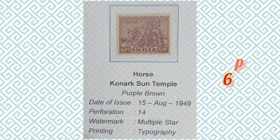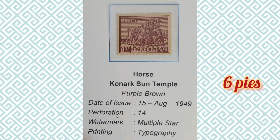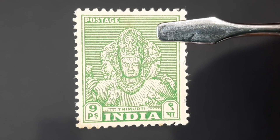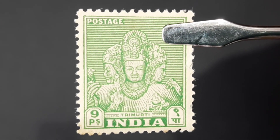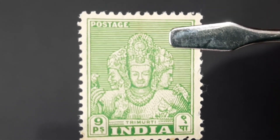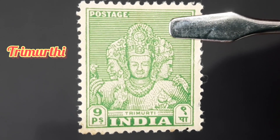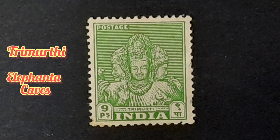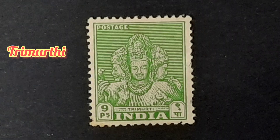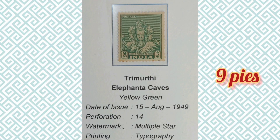The next stamp is the nine pie stamp. The image depicted on this stamp is the Trimurti sculpture found at the Elephanta Caves, which date to the 2nd century BC and are predominantly dedicated to the Hindu god Shiva. The philatelic information about this stamp can be found here.